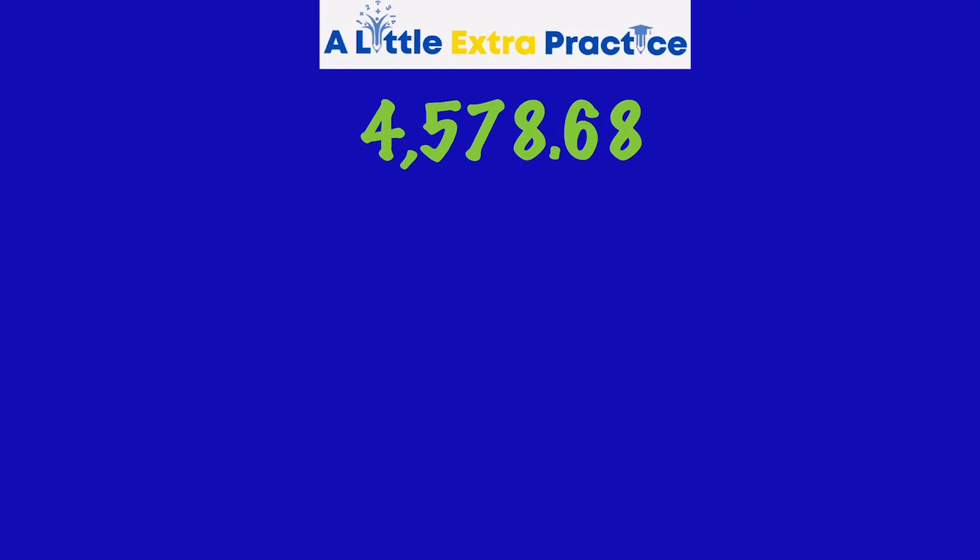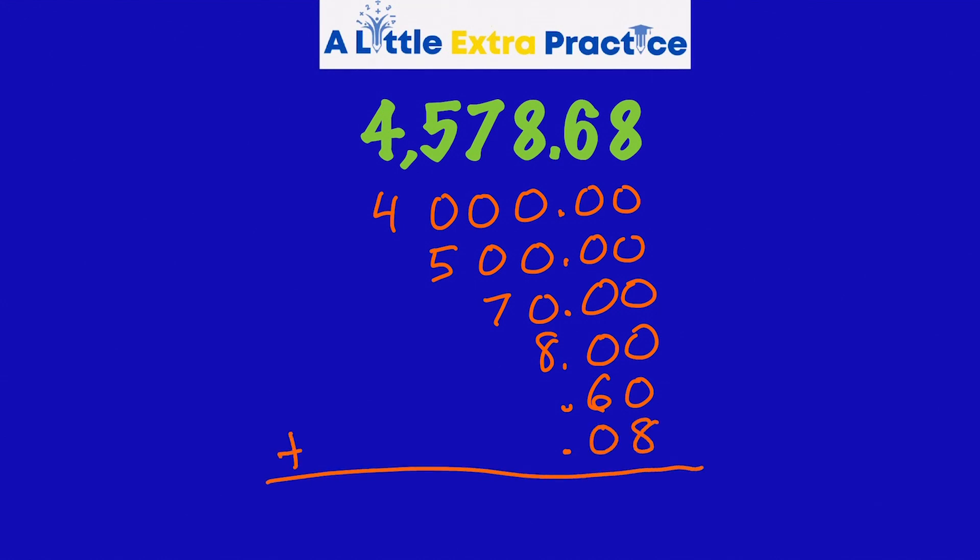This way also works with decimal numbers. So we have 4,578 and 68 hundredths. Just like before, a 4 under the thousands followed by zeros. I'm going to put decimal 00 out to the hundredths place. 5 in the hundreds. 7 in the tens. 8 in the ones. And then I just keep going. A 6 in the tenths. I'm going to actually make it 60 hundredths. And then 8 in the hundredths. Just like before, I could add these up and I would get the 4,578 and 68 hundredths.